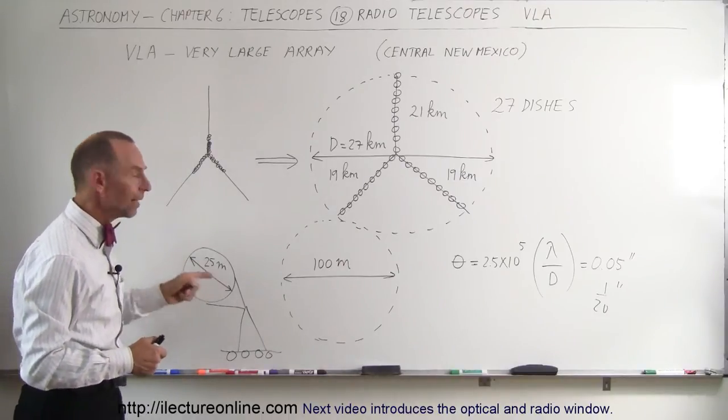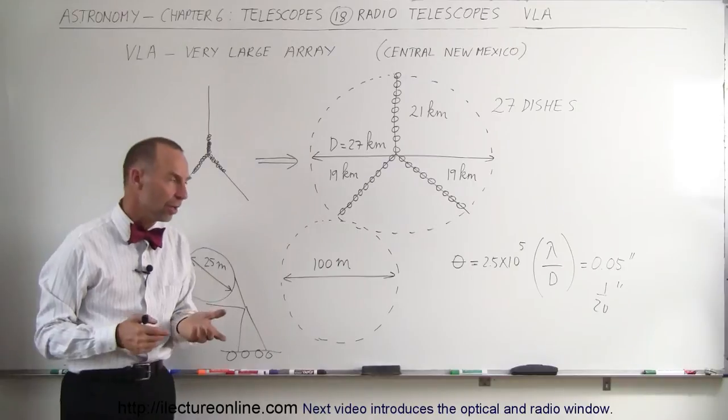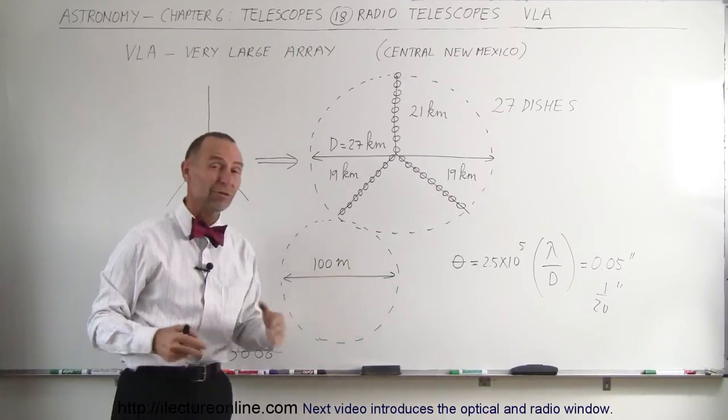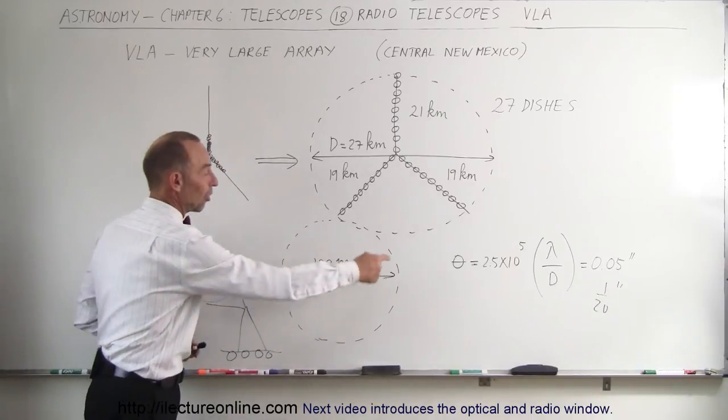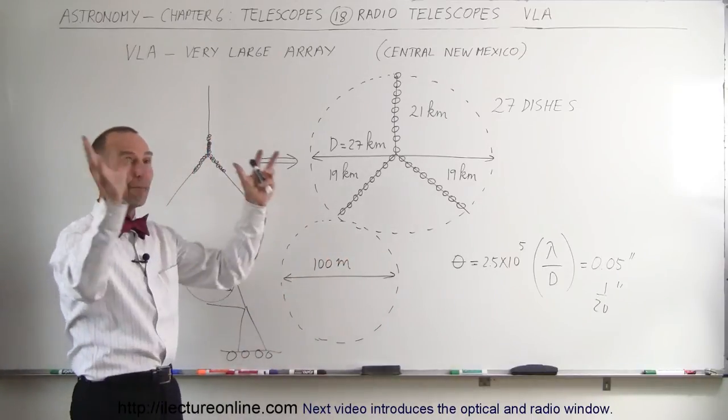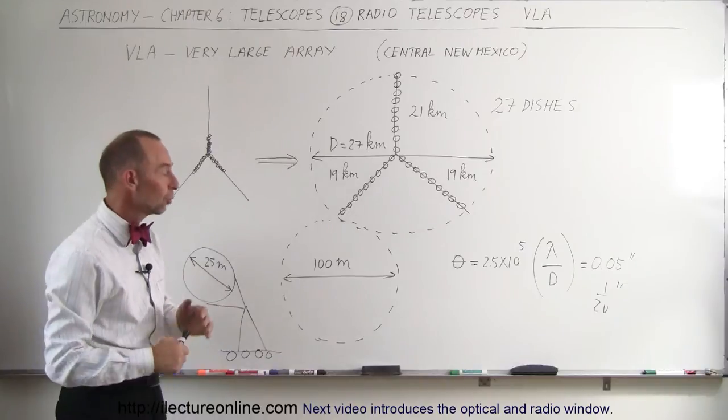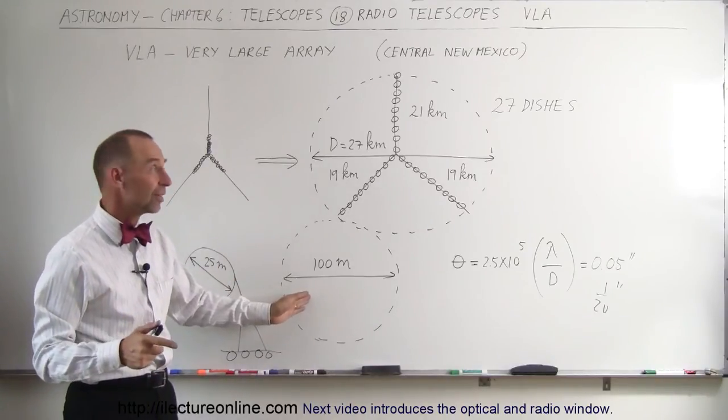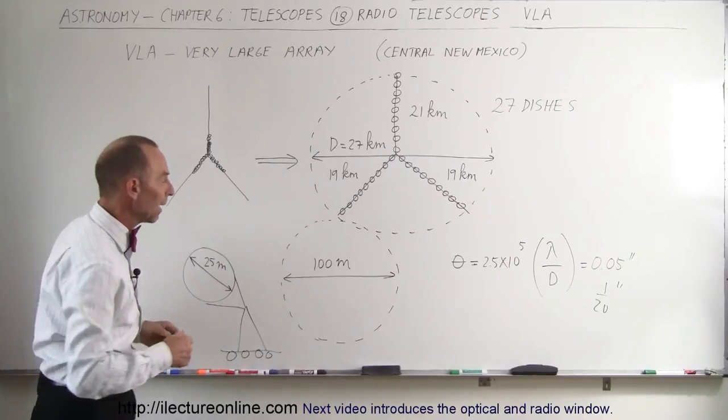Now, each of them had a diameter of 25 meters. Well, how does that compare to some of the very big radio telescopes that have a diameter by as much as 100 meters? Imagine a soccer field, put on a dish, and point it to the sky like that. That's an absolute wonder. But 25 meters, of course, is not as good as 100 meters, but if you have 27 of them, you kind of compensate for that.